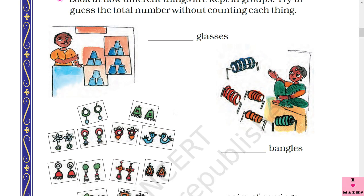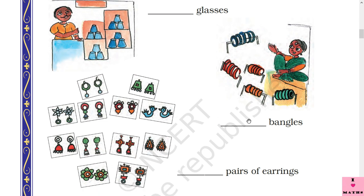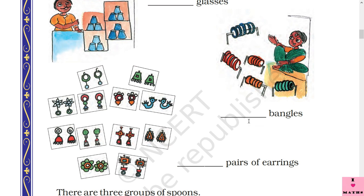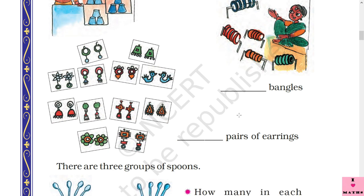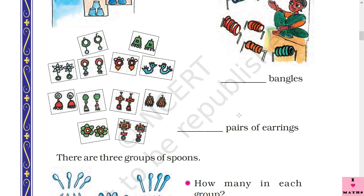Now find out how many bangles there are. In one group: one, two, three, four, five — all groups have five bangles each. Five plus five is ten, ten plus five is fifteen, fifteen plus five is twenty, twenty plus five is twenty-five. So twenty-five bangles in all!